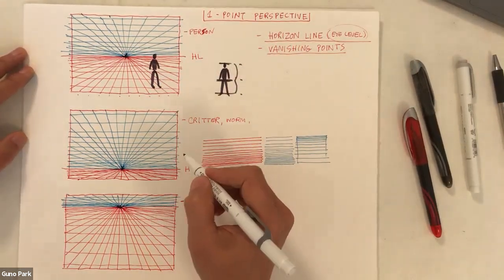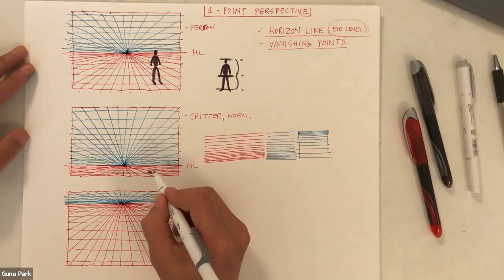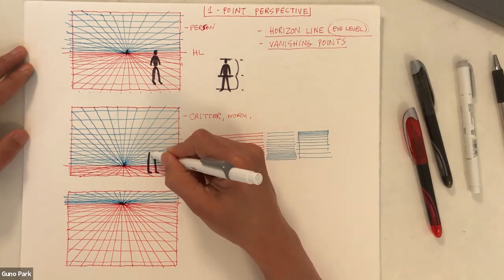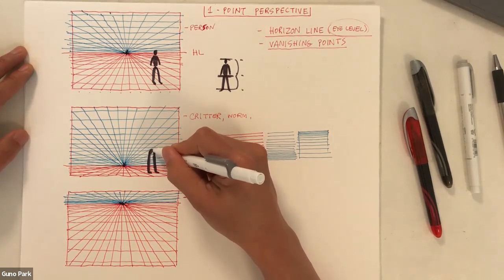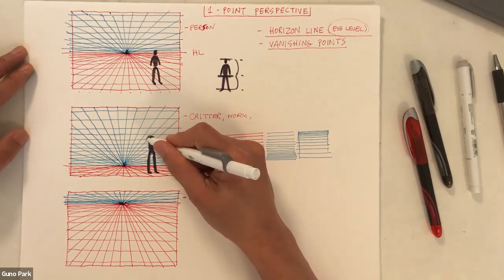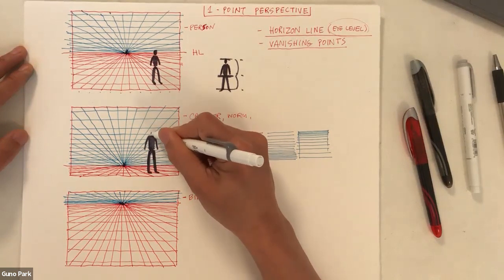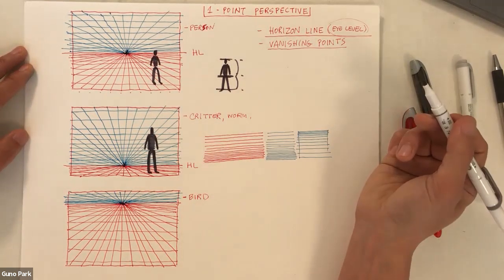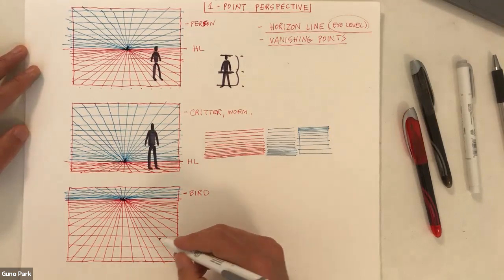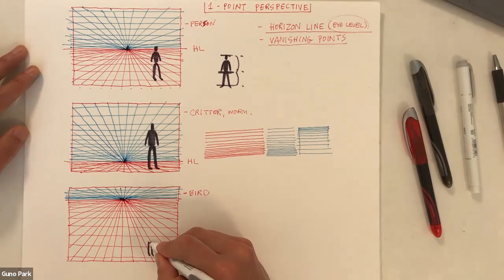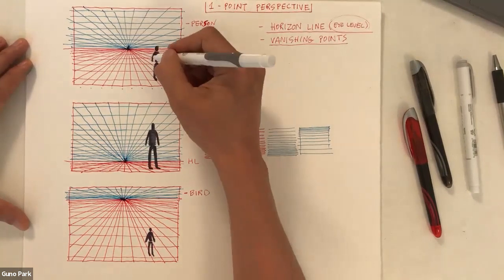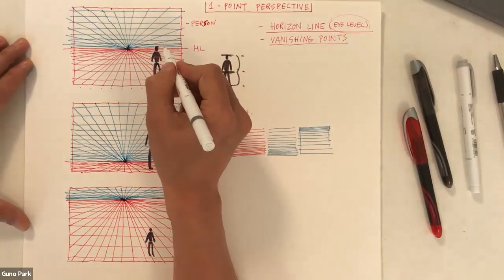Now I'll draw the same person from the worm's eye point of view. I put the feet near the horizon line and draw the legs up. From the worm's eye view, the person looks a little taller because we're looking up at them. For bird's eye view, the person is much smaller because you're looking down at them. The same figure looks very different depending on your viewpoint.